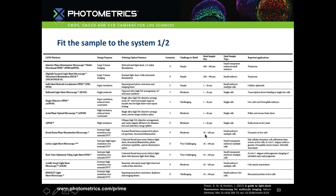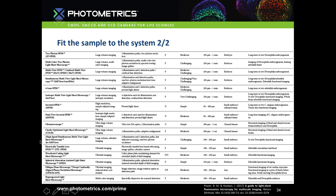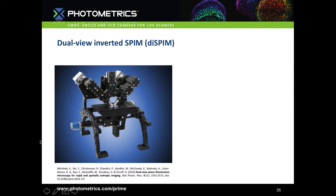There are a vast number of lightsheet systems because people who build their own systems build them to fit their sample. By decoupling the illumination and detection paths, the microscope can be very flexibly arranged in space, giving almost endless opportunity for customisation. Although it's reasonably simple to build a lightsheet microscope, the huge number of variants can be intimidating — but as long as you remember the sample comes first, the system should do no more than you need it to do.